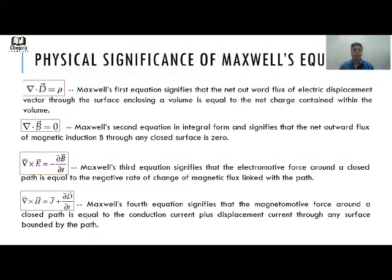The last equation, which is the modified Ampere's circuital law, signifies that the magnetomotive force around a closed path is equal to the conduction current plus the displacement current through any surface bounded by the path.